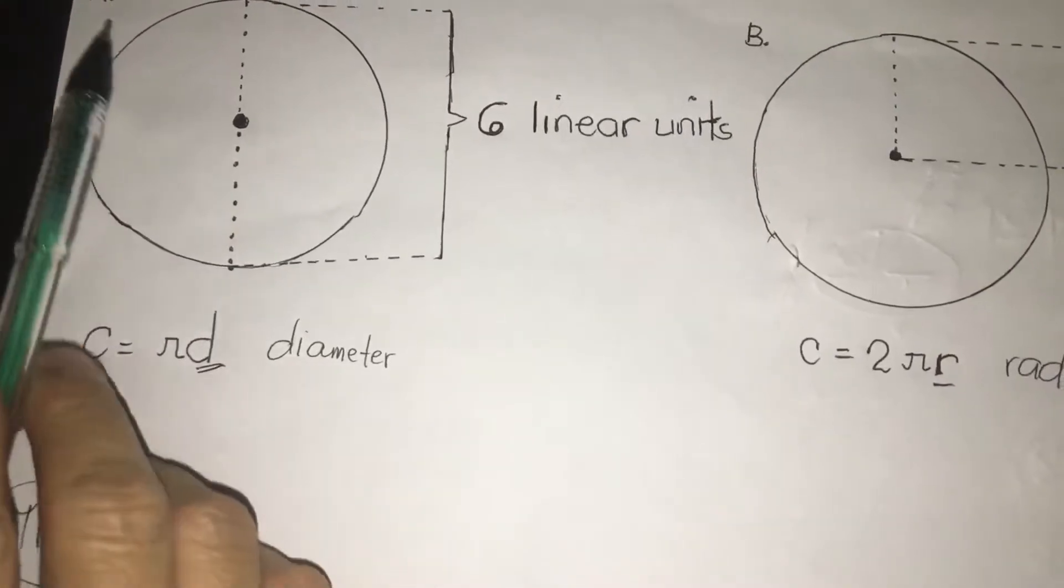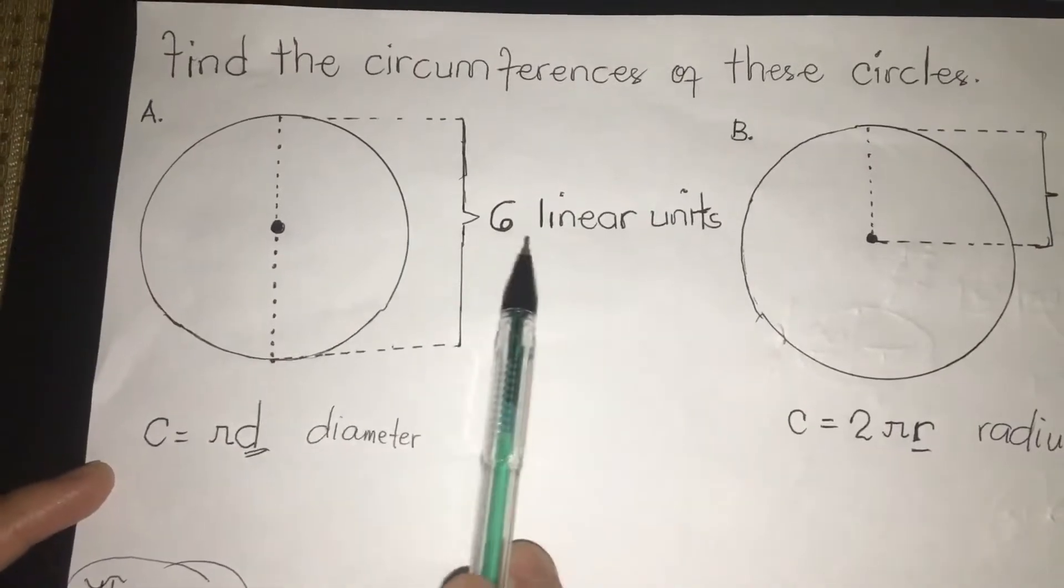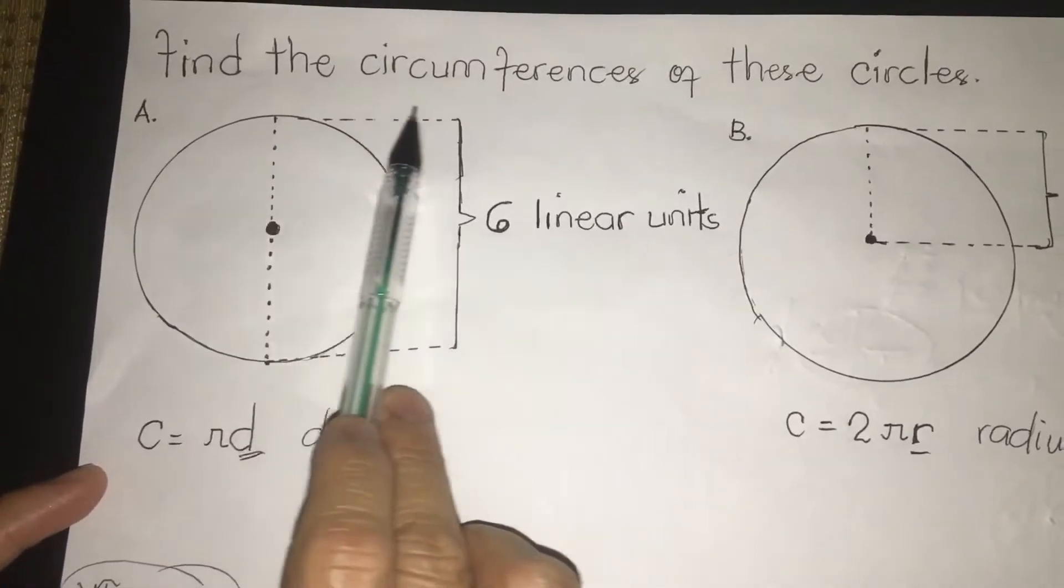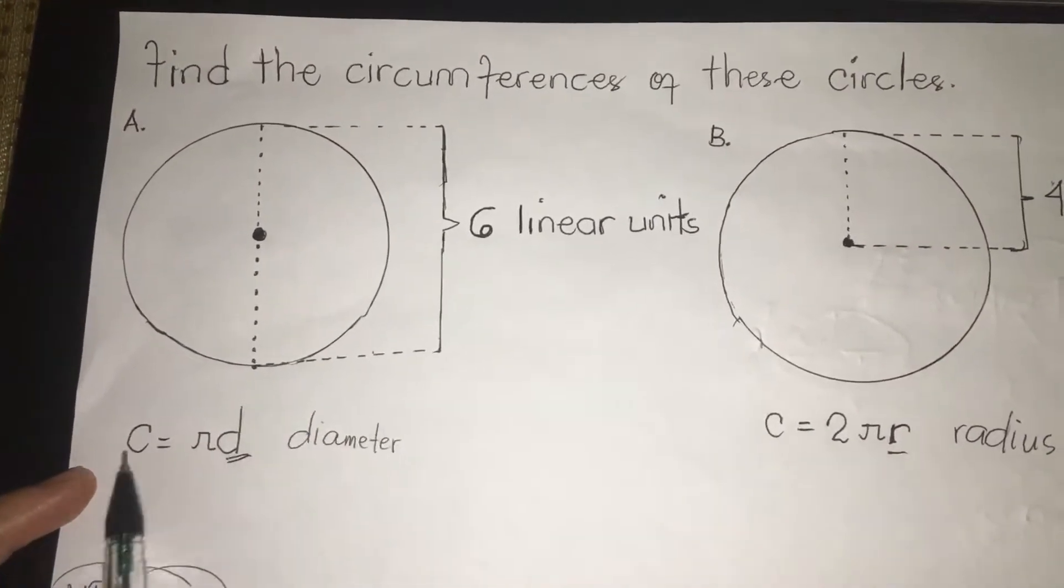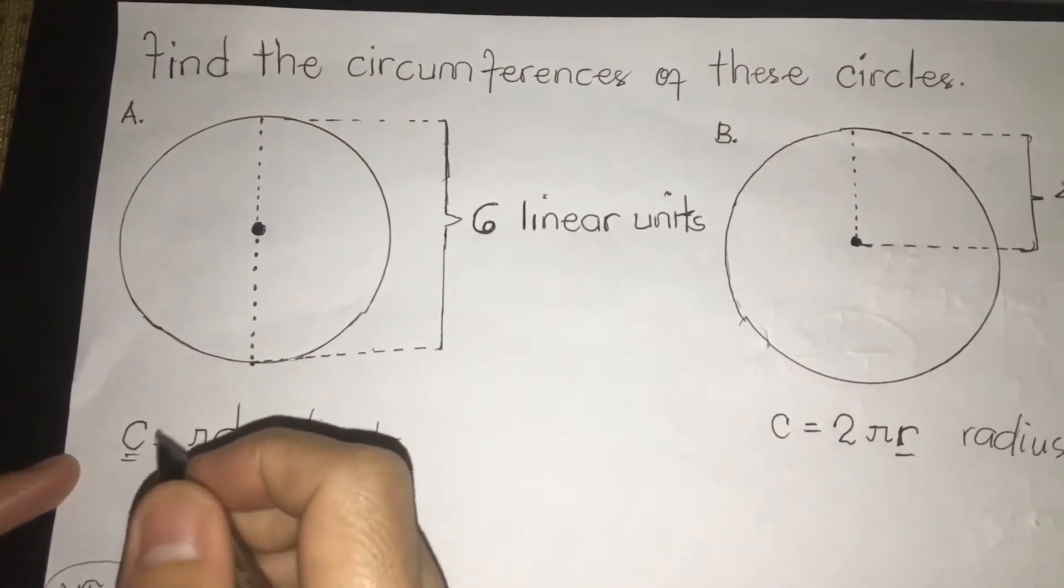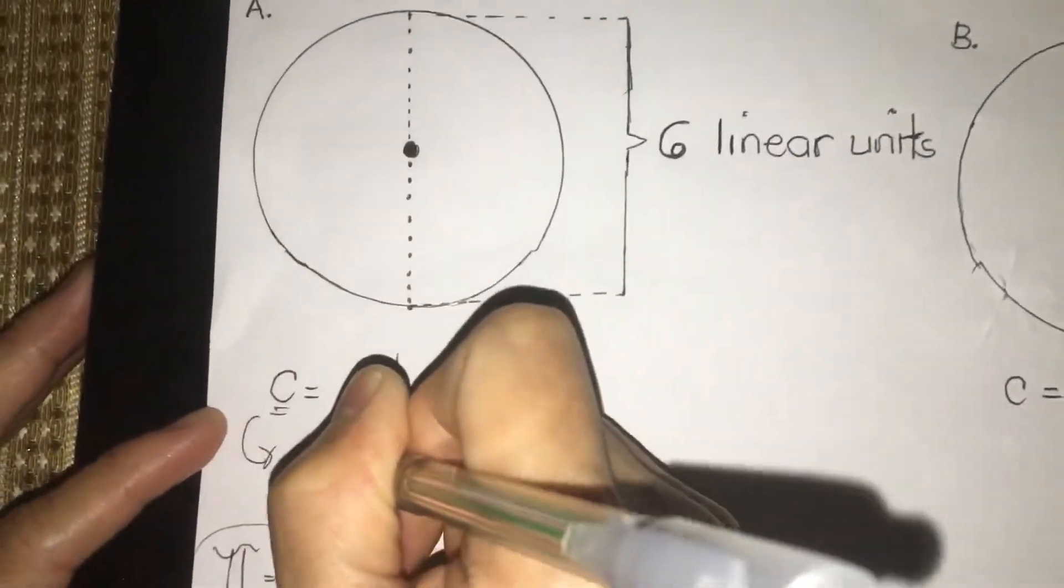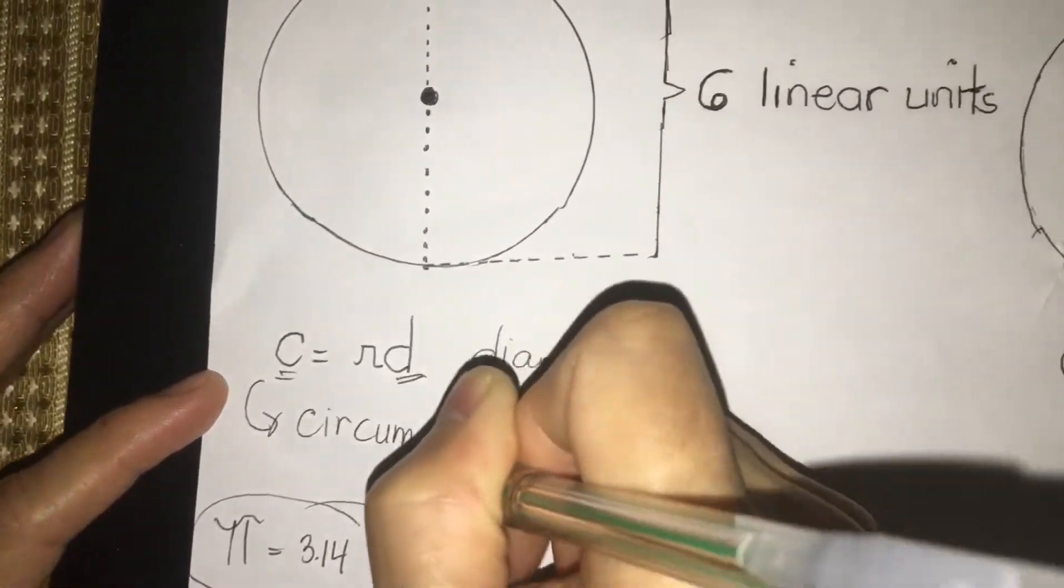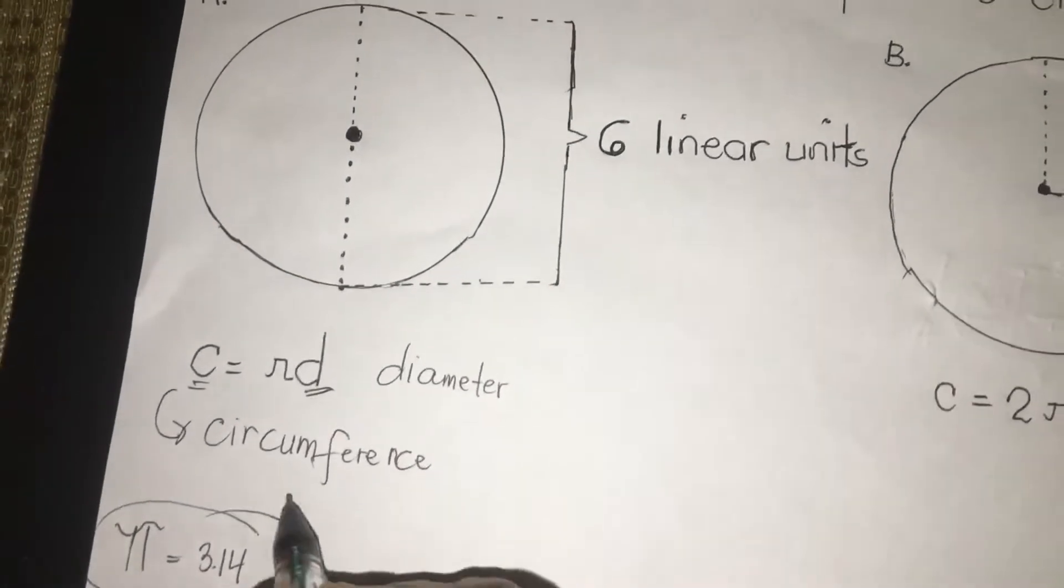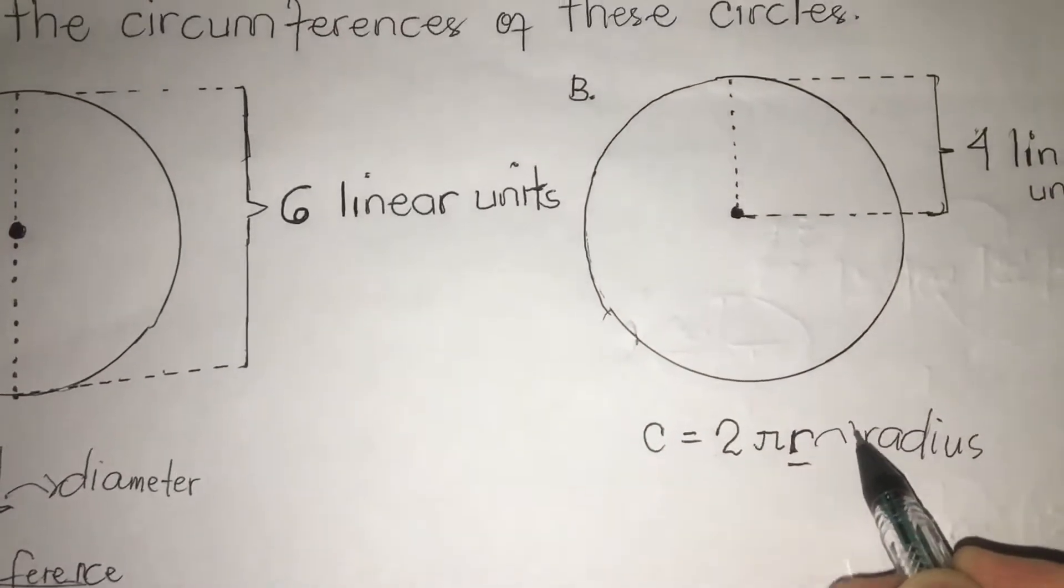Now we are going to solve letter A. We have first here, the first circle. We have six linear units. All we have to do here, because our drawing shows the diameter, is C equals pi D. C is what we call the circumference. D is for the diameter, R is for radius.